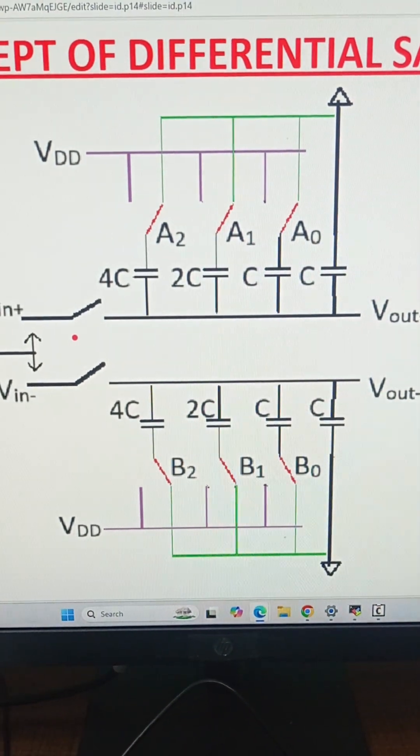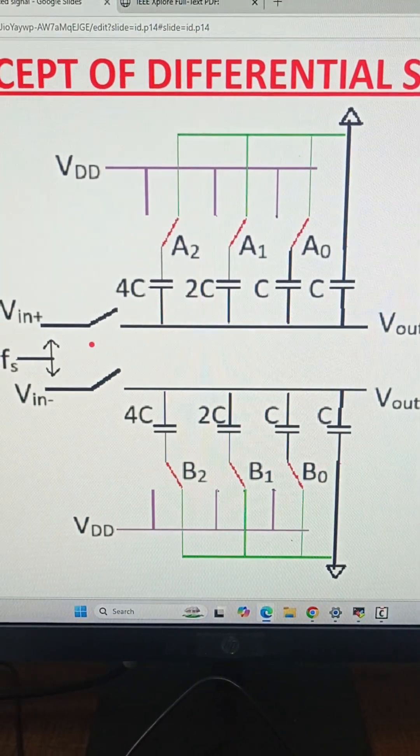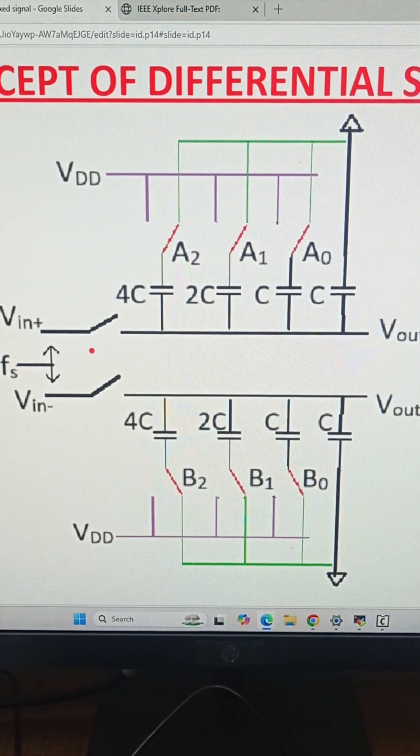We can assume for our example that V_DD equals 1 volt, V_in+ equals 0.6 volts, and V_in- equals 0.4 volts.